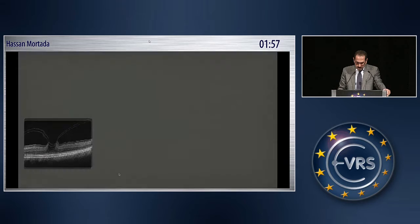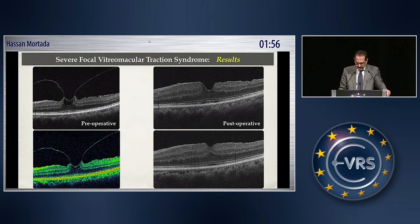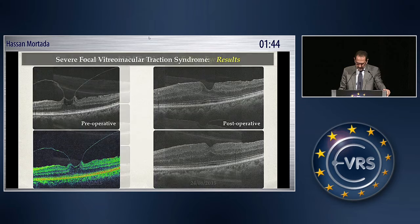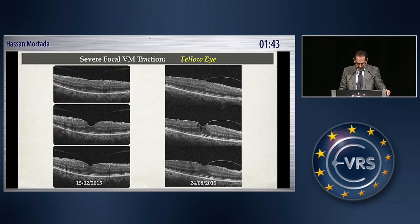The internal limiting membrane is elevated, and this is the pre- and postoperative pictures. The configuration of the macula is being restored to normal, and the outer retina is healthy.